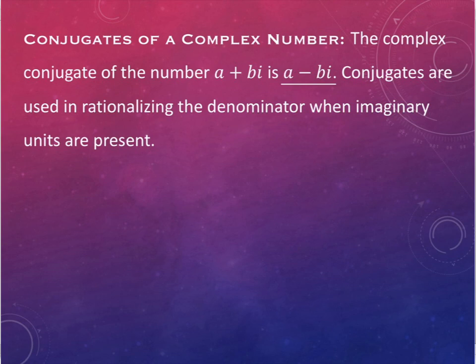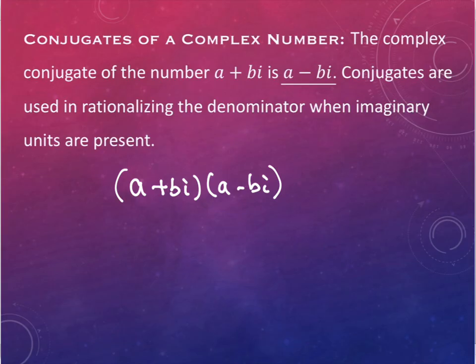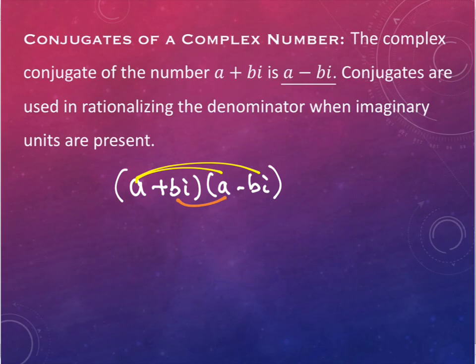And the reason this works is because of the following. I'm going to jot down what happens when we multiply these two things together. So when we multiply a plus bi and a minus bi, we're going to do the same thing we were doing on the previous multiplication problems. We're going to multiply the first term times everything. And we're going to multiply our second term times everything. So at the beginning, I have a times a, which gives me a squared.